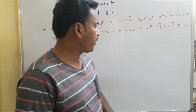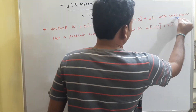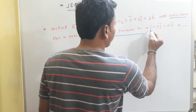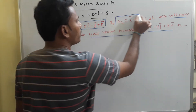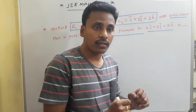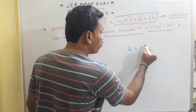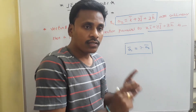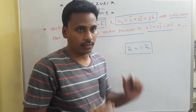This problem is related to collinear vectors as well as the unit vector parallel to a given vector — two concepts are involved. The first is collinear vectors and the second is identifying the unit vector parallel to a given vector. In vectors, two vectors a1 and a2 are considered collinear if a1 = λ·a2, meaning one vector is a scalar multiple of the other.